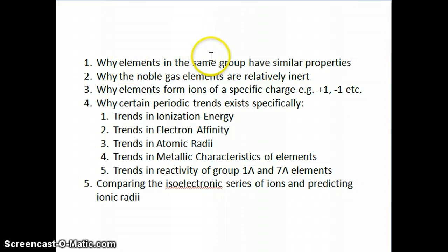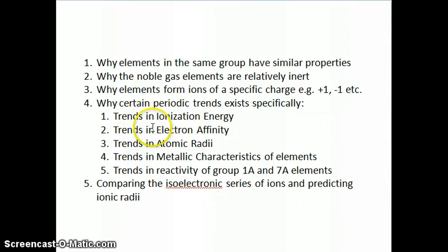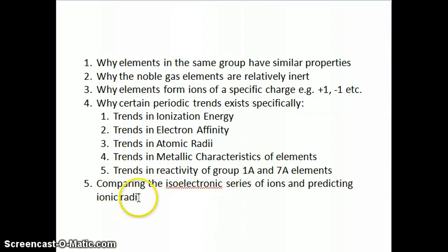We're going to talk about why elements in the same group are found to have similar properties. We're going to talk about why noble gases tend to be relatively inert — in other words, they don't react that much — why other elements tend to be reactive, and why they form ions of a specific charge, for example, a plus one versus a negative one ion. We're going to talk specifically about periodic properties: trends in ionization energy, electron affinity, atomic radii, metallic characteristics, and certain reactivity trends in group 1A and 7A elements. We're also going to talk, lastly, about what we refer to as the isoelectronic series, which is basically ions that all have the same number of electrons.